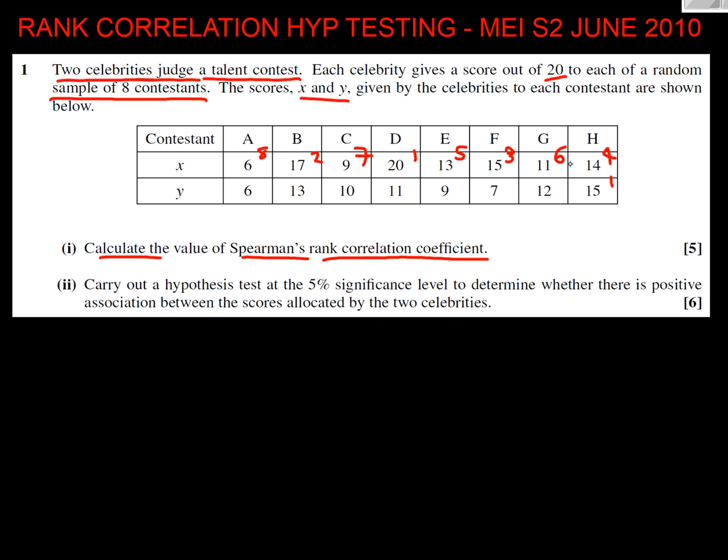Let's do the Y data. Well, 15 is the highest here, that's number 1. 13 is second highest, that's 2. 12 is third, and 11 is fourth. 10 is fifth, 9 is sixth, 7 is seventh, and 6 is eighth. So we've ranked them. Always remember to rank the data. If you just plug that raw data in, you'll be doing a Pearson type thing rather than a ranked correlation.